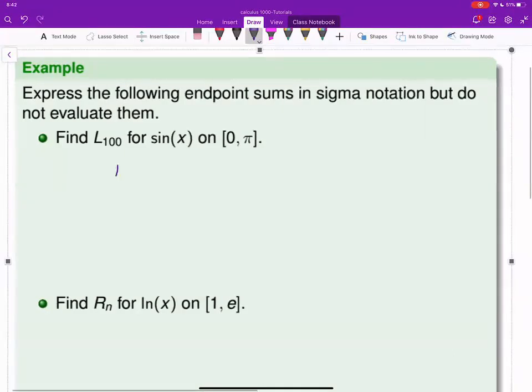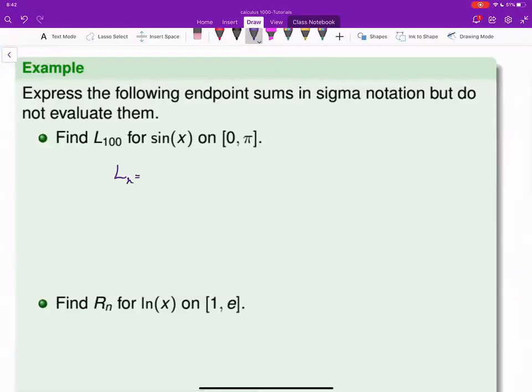Remember, for example, L_N, the left endpoint approximation for a function on the interval [A, B] is sum of i going from 1 to N, F of X, or delta X times F of A plus (i minus 1) times delta X. Delta X was the length of the subintervals, which are B minus A, length of the given interval, divided by N. So we divide it into N equal subintervals.